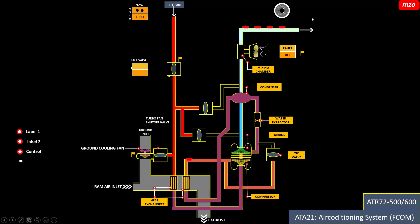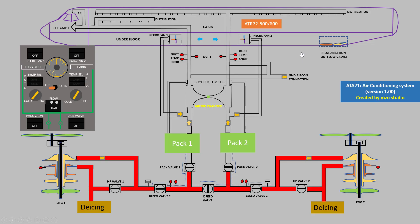The air goes to the mixing chamber and then to the cabin. This is the recirculation fan located in the underfloor area. It recirculates air from the underfloor back to the mixing chamber. The recirculation and pack air are mixed and distributed to the flight compartment.